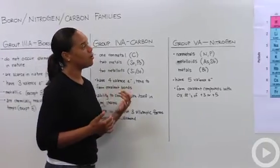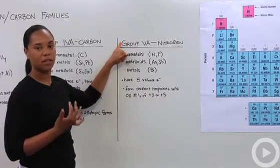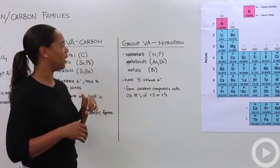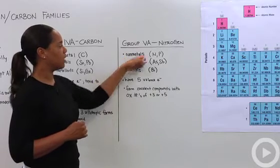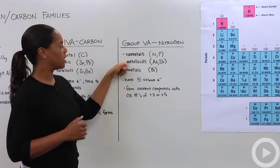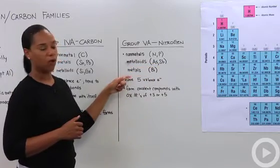Let's now talk about nitrogen. The nitrogen family, which is group 5A, and nitrogen is really important because it is a part of the air that we breathe. Within the nitrogen family you have your nonmetals nitrogen and phosphorus, your metalloids arsenic and antimony, and your metal bismuth.